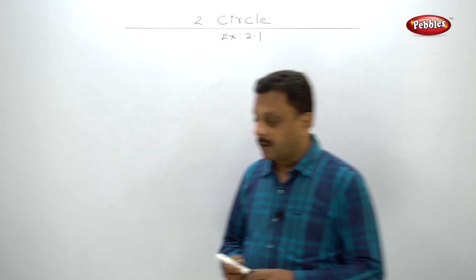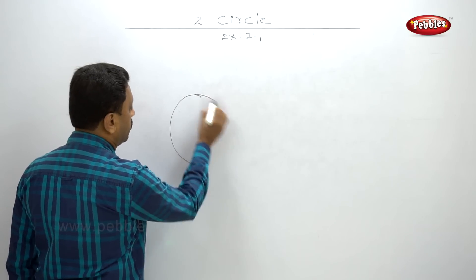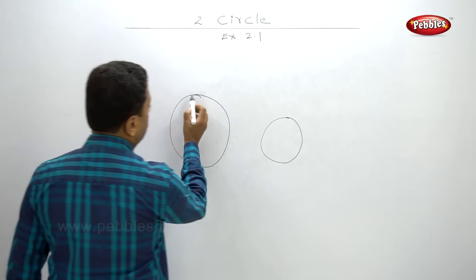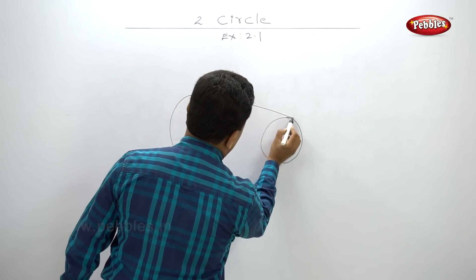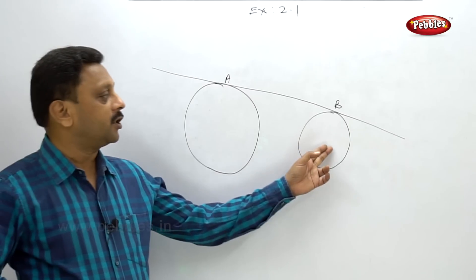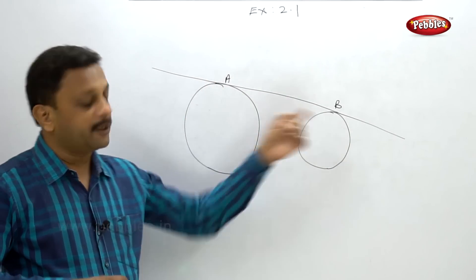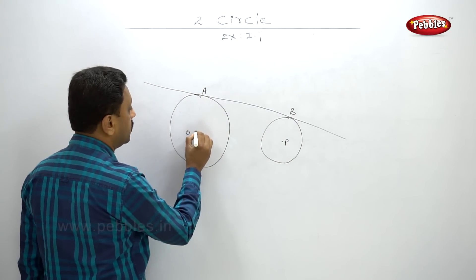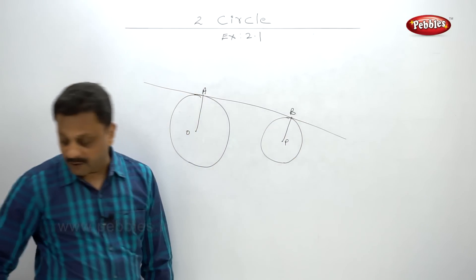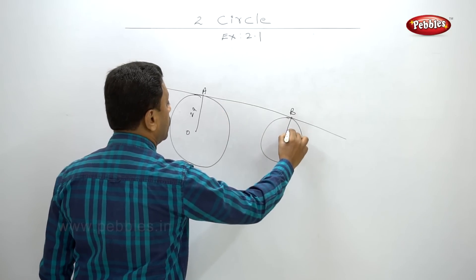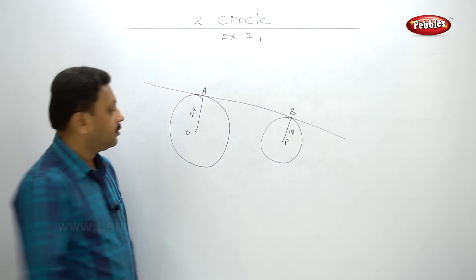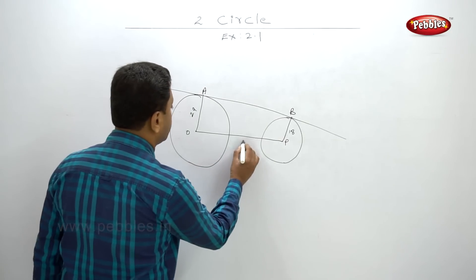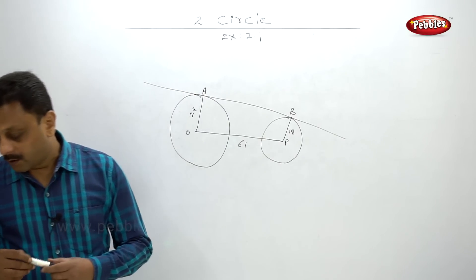Problem number 6: two circles with a common tangent AB touching at A and B. Centers O and P have radii 29 and 18. The circles are not touching each other; OP is given as 61. We have to find AB.